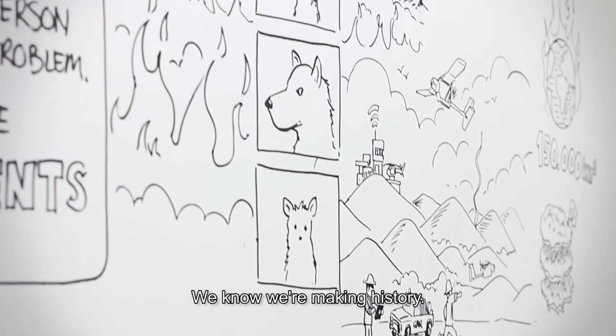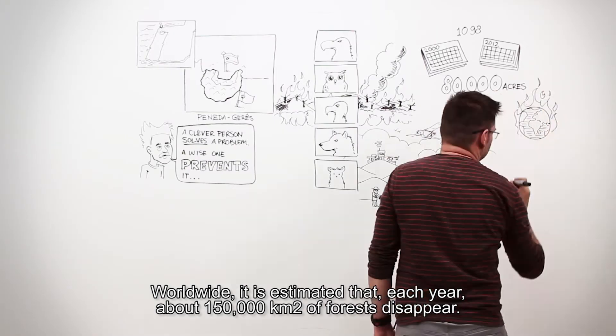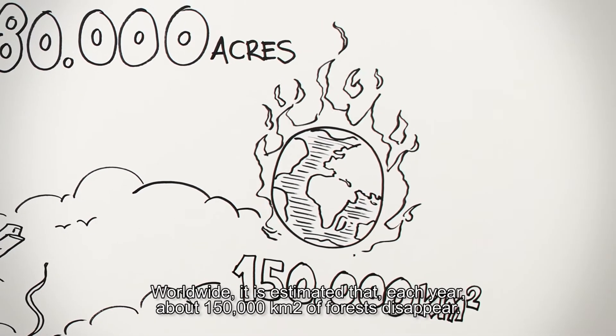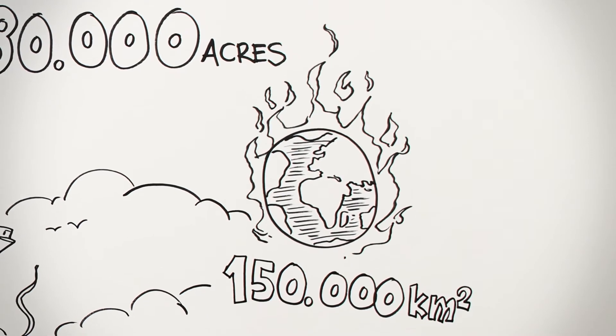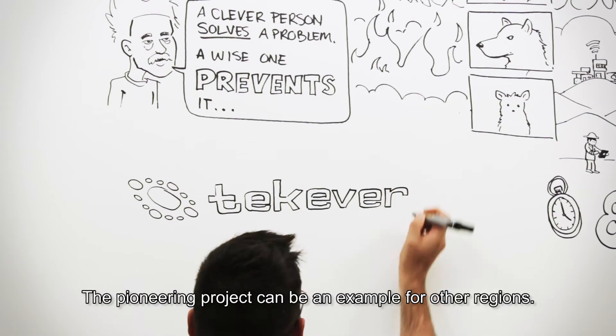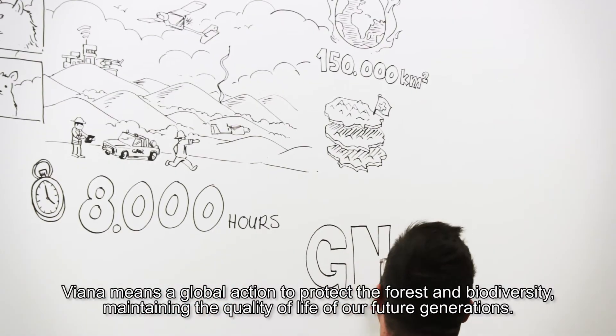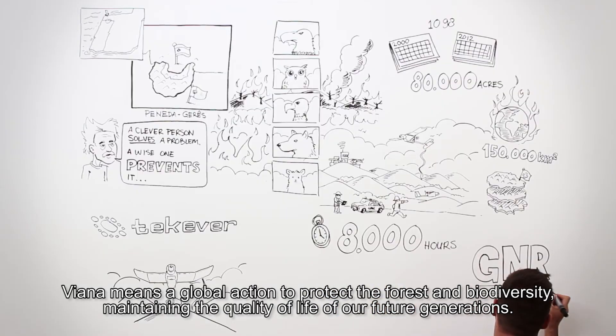We know we're making history. Worldwide, it is estimated that each year, about 150,000 square kilometers of forest disappear. The pioneering project can be an example for other regions. Viana means a global action to protect the forest and biodiversity, maintaining the quality of life of our future generations.